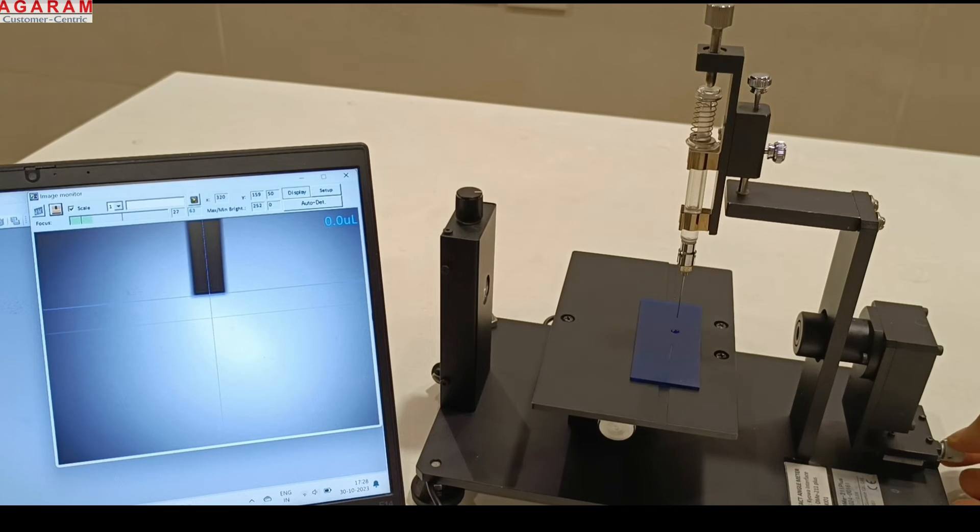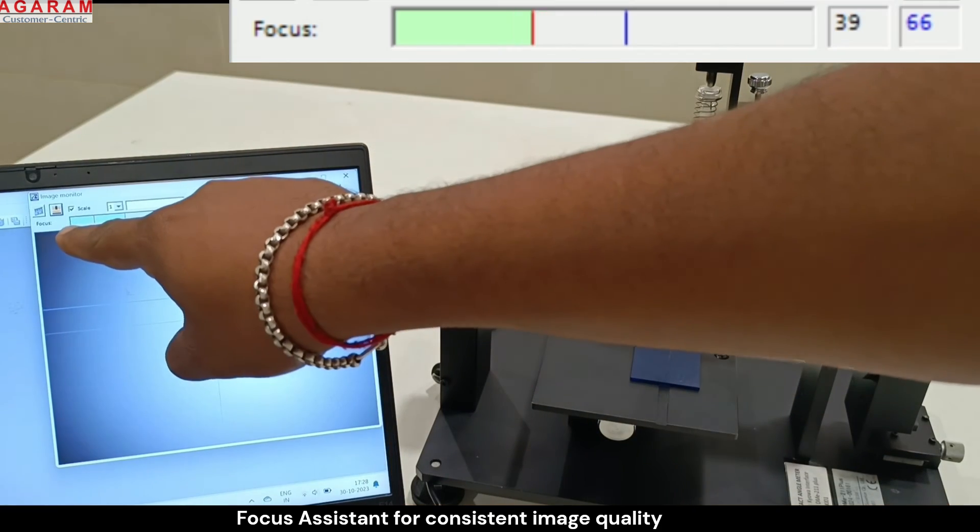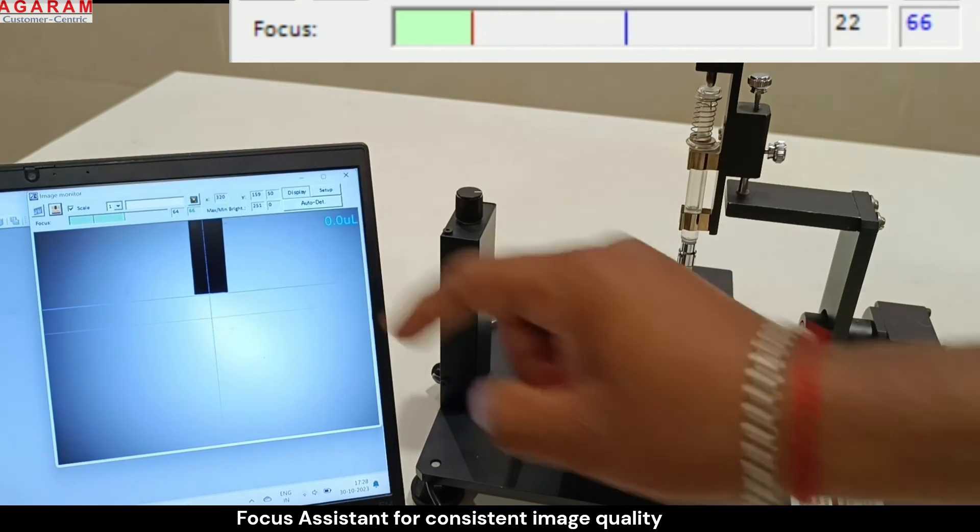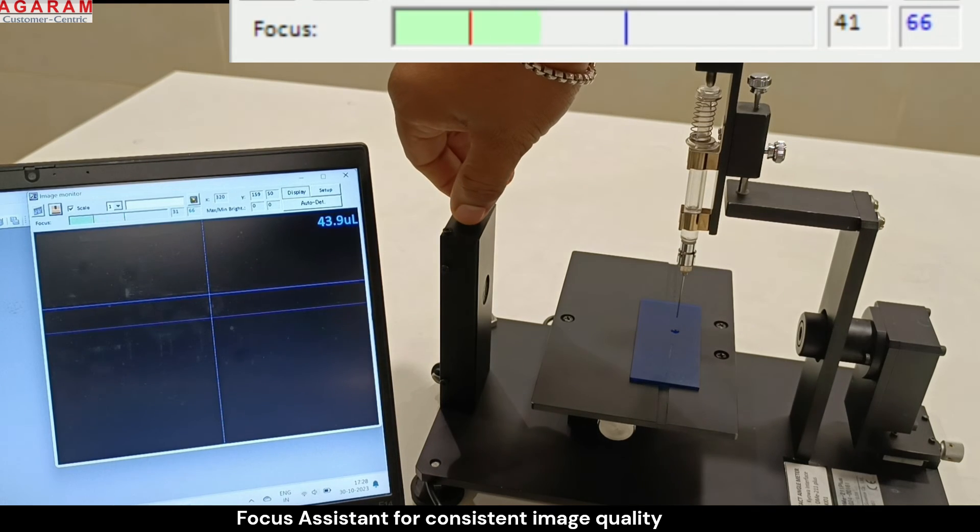The intuitive focus assistant makes it easy for you to objectively tune the camera and light to get the maximum focus. You will see a real-time focus bar telling you the percentage of focus it is in. We prefer it to be at 70.